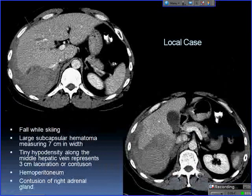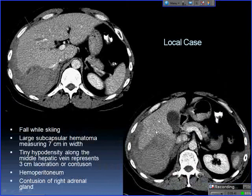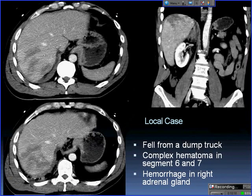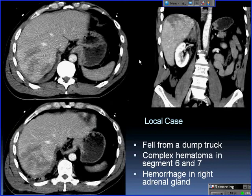Local case: this patient fell while skiing and sustained a large liver subcapsular hematoma, compressing the underlying liver parenchyma. There's also a small hypodensity along the middle hepatic vein — a small laceration or intraparenchymal contusion. There's hemoperitoneum, and again something to watch for: contusion of the right adrenal gland. Another local case — a patient who fell off a dump truck — showing a complex hematoma through segments 6 and 7, with linear laceration components and irregular hematoma on the coronal view, with hemorrhage superior to the kidney in the right adrenal gland.